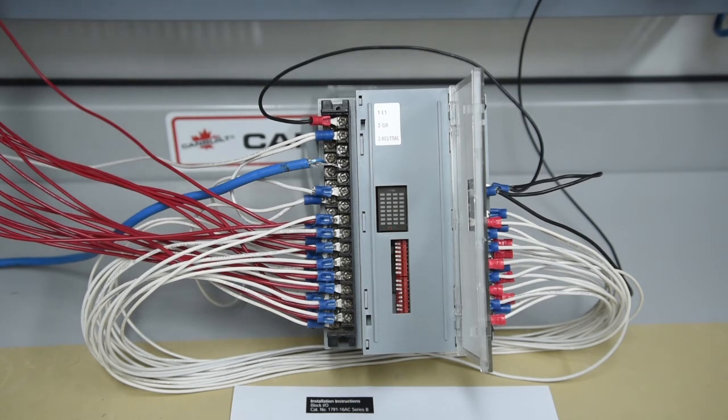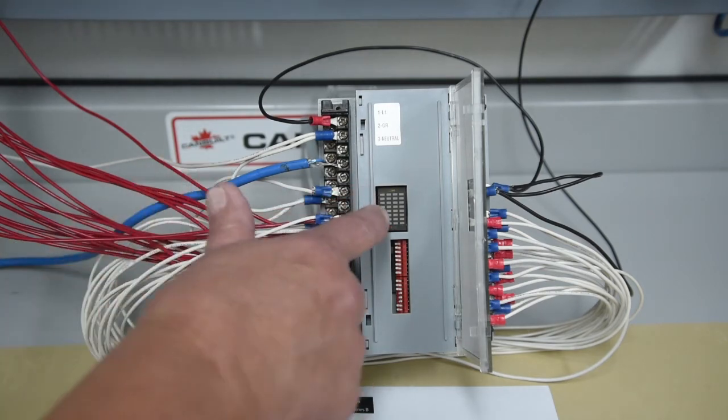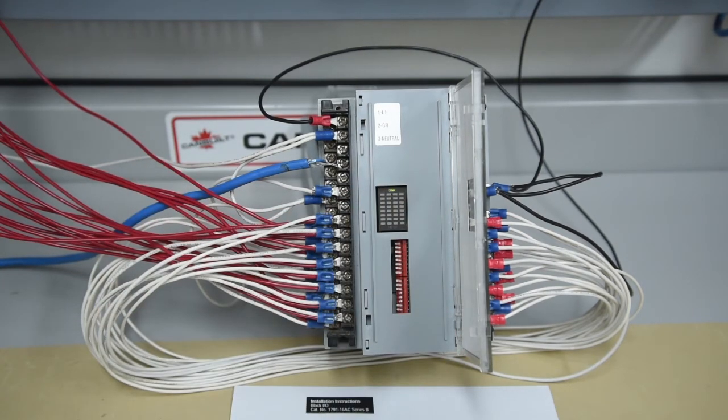The only way to get that so it communicates again is now you have to put the PLC into program. Go into your channel configuration. And in this case, this is channel 1B. Change it to match that remote I.O. Apply it. And you can see how it's now, as soon as I applied it, it's flashing green. So it's ready to go. Put it back into run mode.